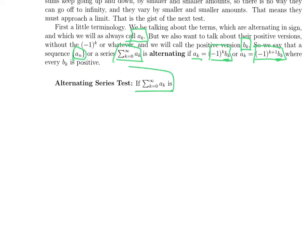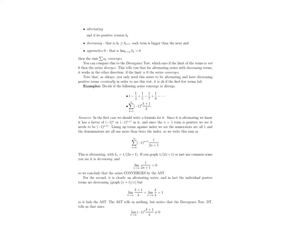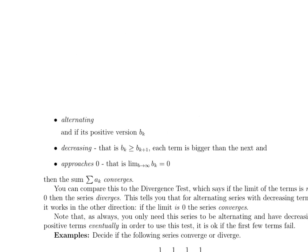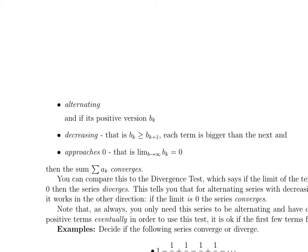With that in mind, we'll say that a sequence or a sum is alternating if the terms can be written as (-1)^k or (-1)^(k+1) times a positive bₖ. Here's the alternating series test. If the series is alternating, and if its positive version bₖ is decreasing, and it approaches 0, so the limit of the positive terms goes to 0, then the original sum converges. This is a little bit like the divergence test, sort of the other half, but it only works for alternating series.